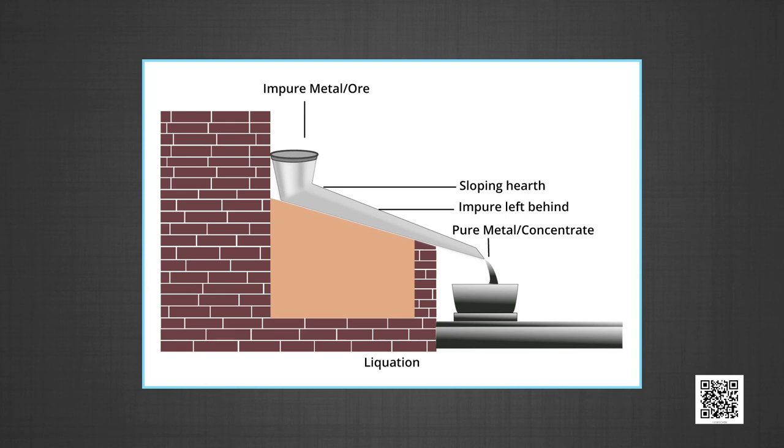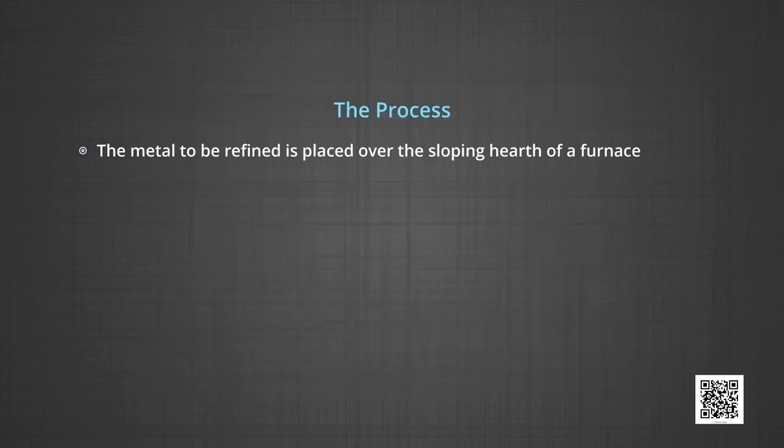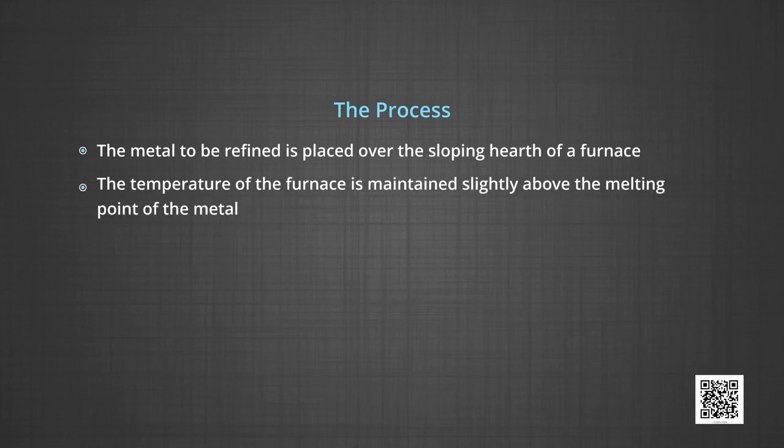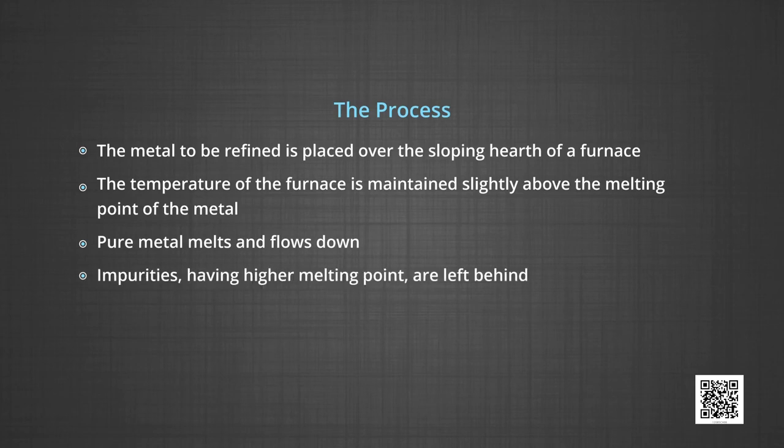In this way, metal is separated from higher melting impurities as shown in the figure. The process is, the metal to be refined is placed over the sloping hearth of a furnace. The temperature of the furnace is maintained slightly above the melting point of the metal. The pure metal melts and flows down. Impurities having higher melting point are left behind.